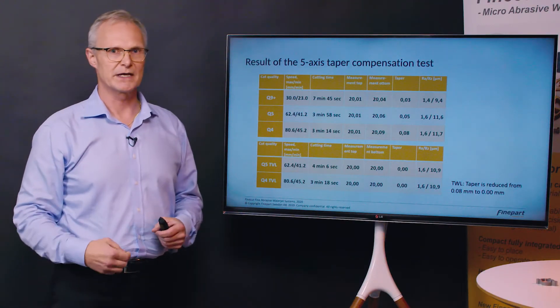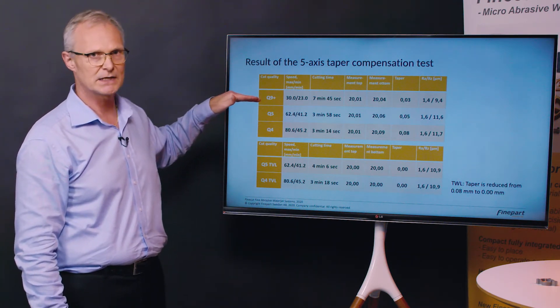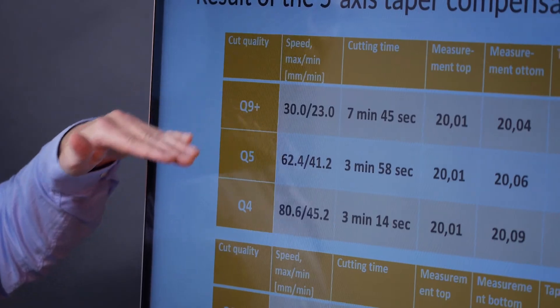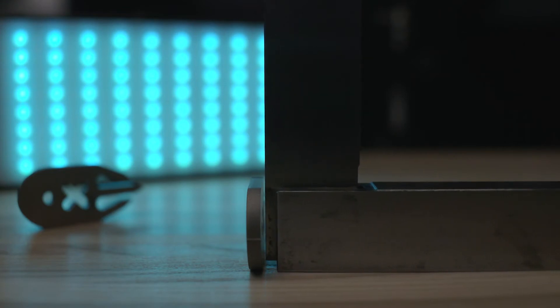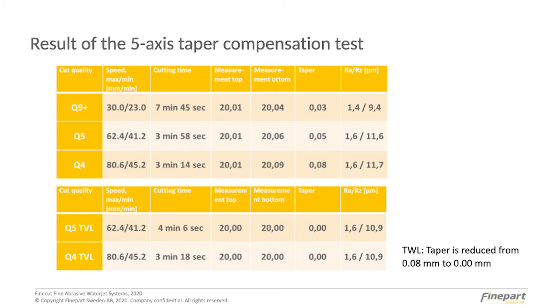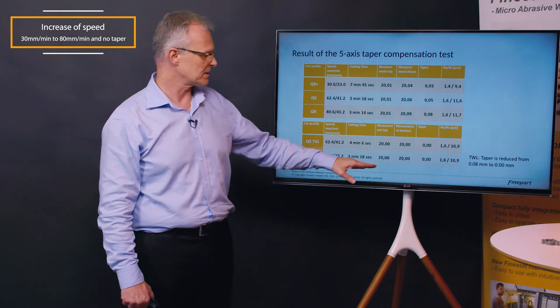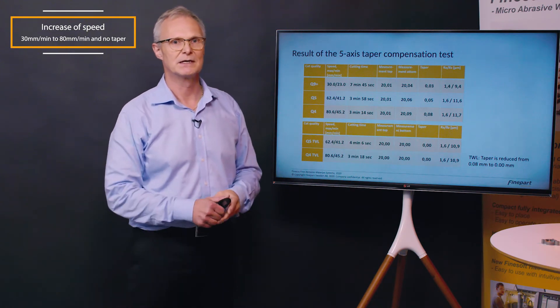So when we were trying this we have been making test cuts. We tried to cut with the three axis setup and to get straight walls with no taper we had to reduce the speed to approximately 30 millimeters per minute and it was still difficult to get rid of all of the taper for this part. So what we do now is that we want to compensate the taper by using the five axis control and we went to cut with quality number four with the speed of approximately 80 millimeters per minute and we were actually able to reduce the taper to zero and still maintain the 1.6 micron in RA value.